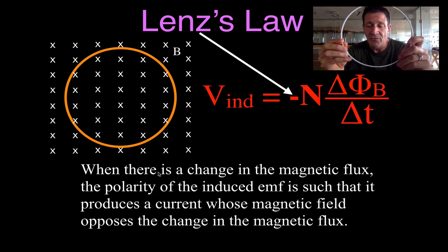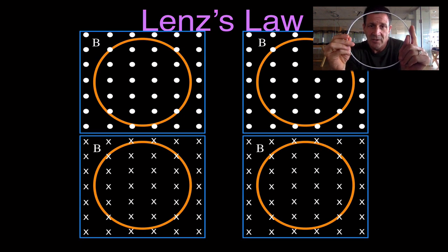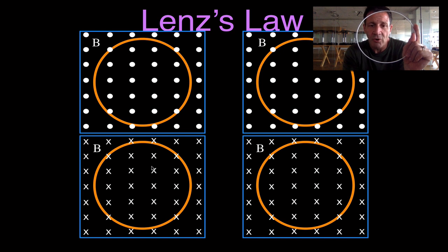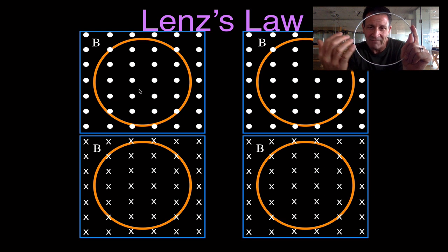Now, what does all that mean? I'm going to go over four different examples — these are really the four basic examples that you should understand conceptually. We can have a magnetic field pointed out of the page — that's what the dots mean. Or we can have a magnetic field pointed into the page — that's what the X's mean. If the magnetic field is pointed out of the page and we're talking about changing a magnetic field to produce an induced EMF...